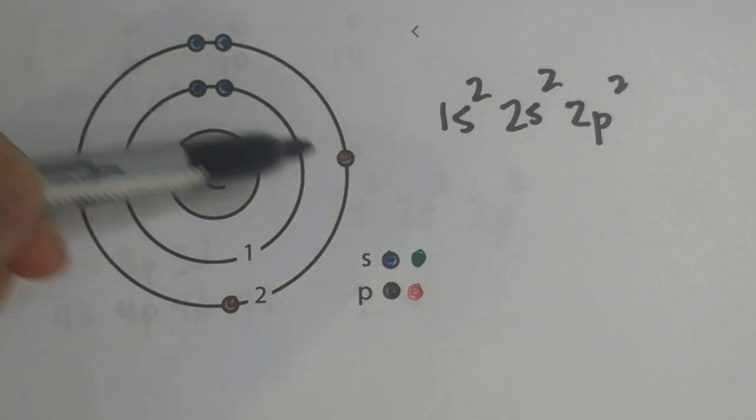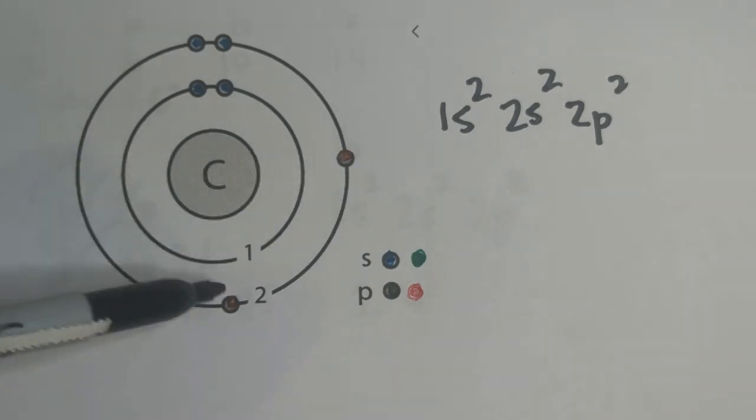And then we have 2 p's there. So there's the model. Let's look at another example.